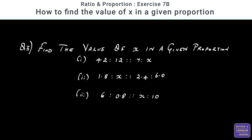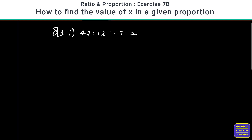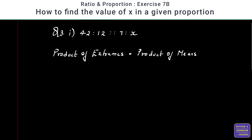The very first question we have is 42 is to 12 as 7 is to x. We need to find the value of x, given that these numbers are in proportion. We say numbers are in proportion when product of means is equal to product of extremes.